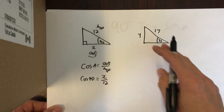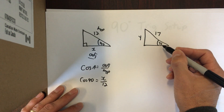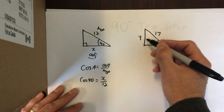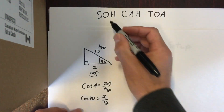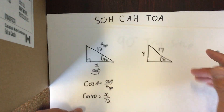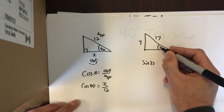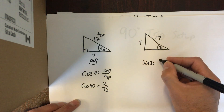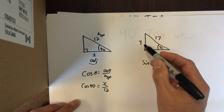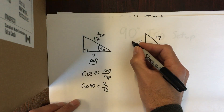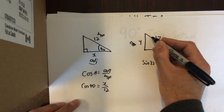To set up this next one, the angle I have is 35 degrees. The side length I'm looking for is the opposite, and the known side length is the hypotenuse. Opposite and hypotenuse go with sine. So the sine of 35 degrees equals opposite over hypotenuse. The opposite side is the side across from the angle, and the hypotenuse is always the longest side.